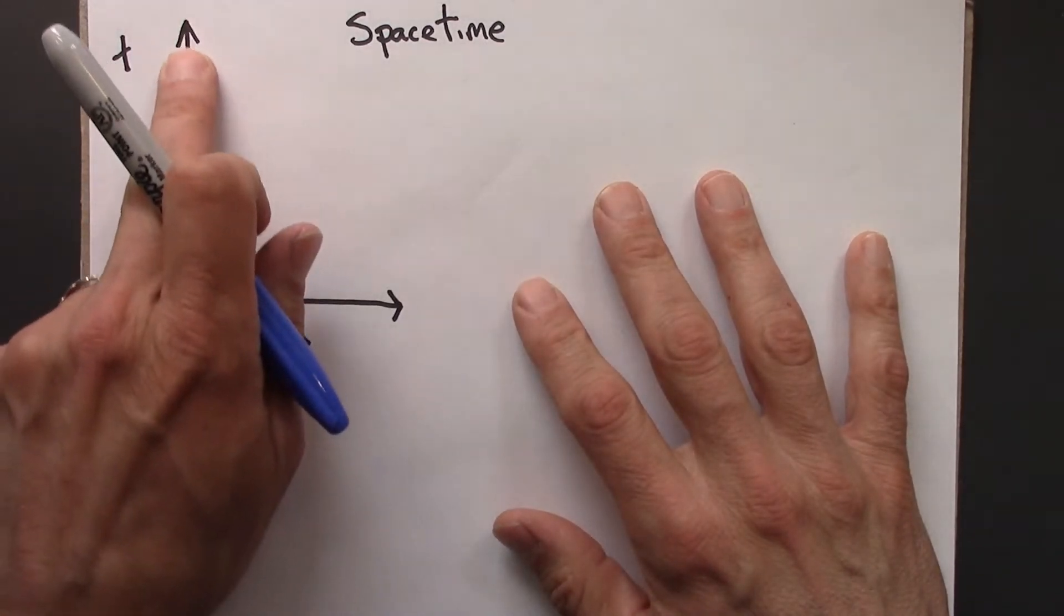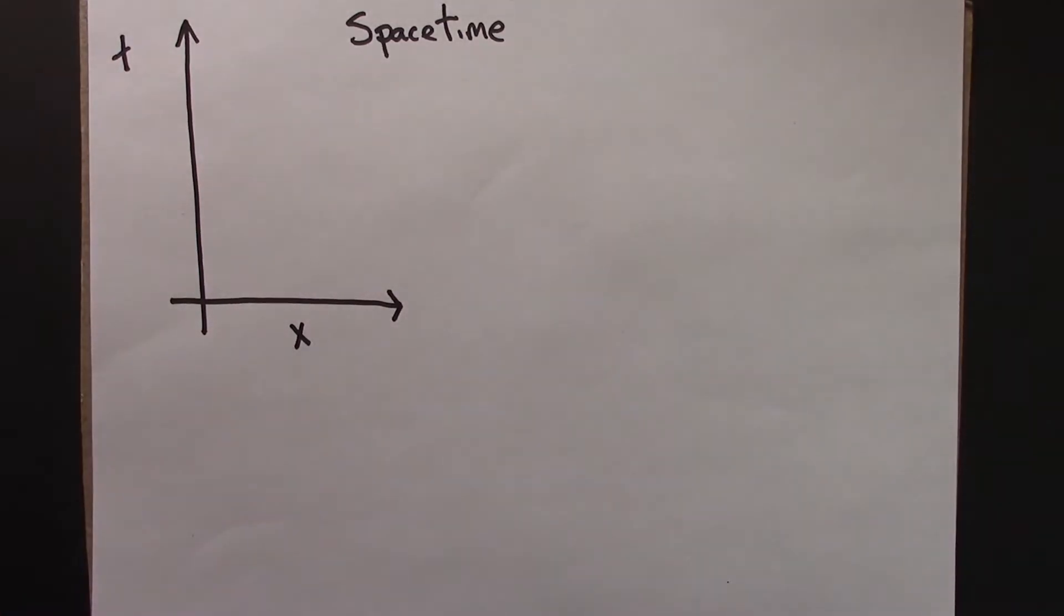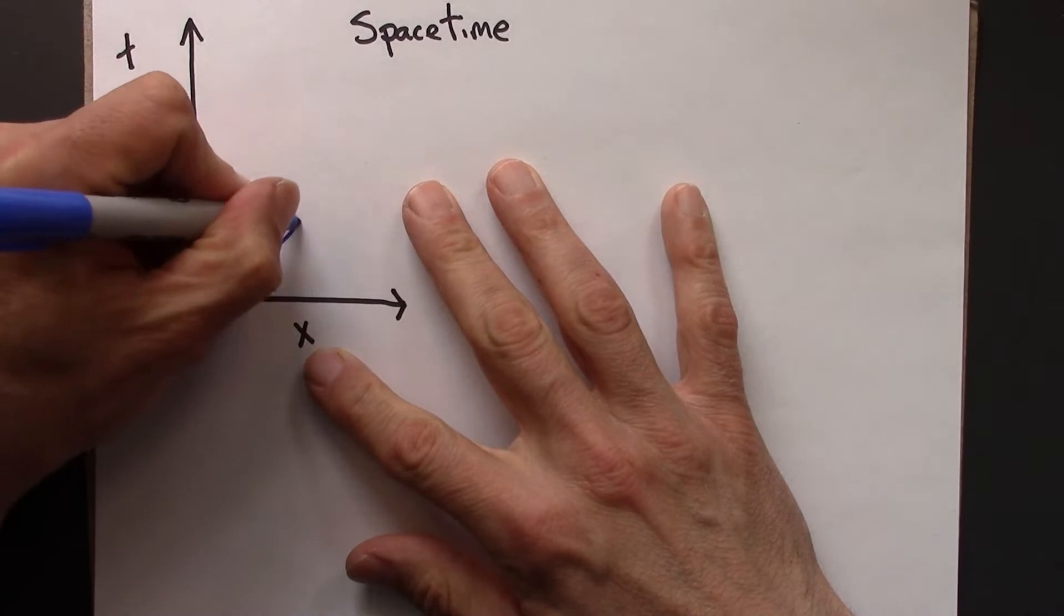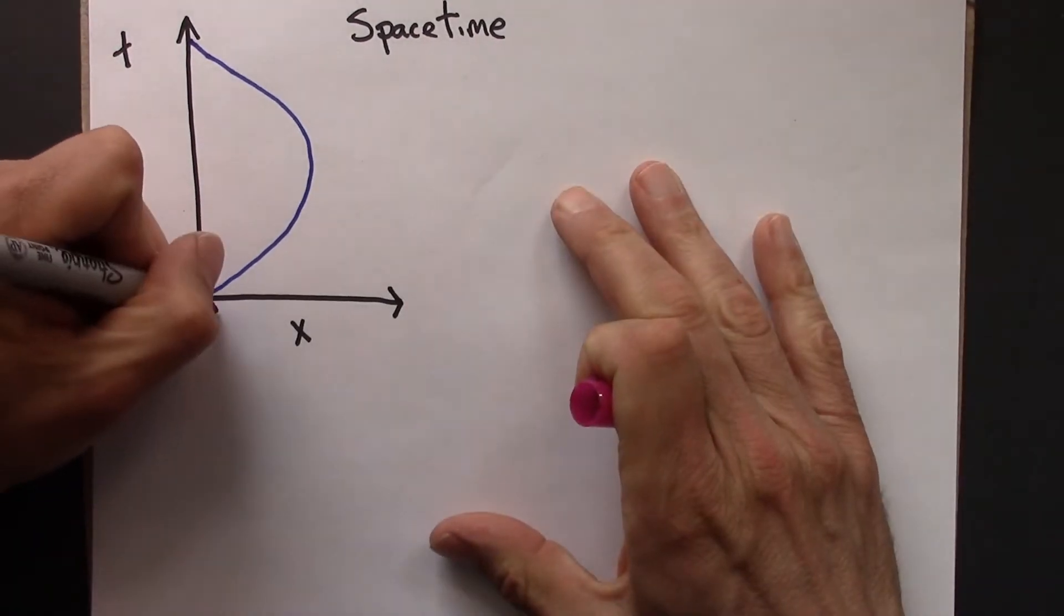Anastasia will be at the origin, so her world line will just be this. Beowulf is going to go to the right for a while, and then is going to come back. Let's label these events.